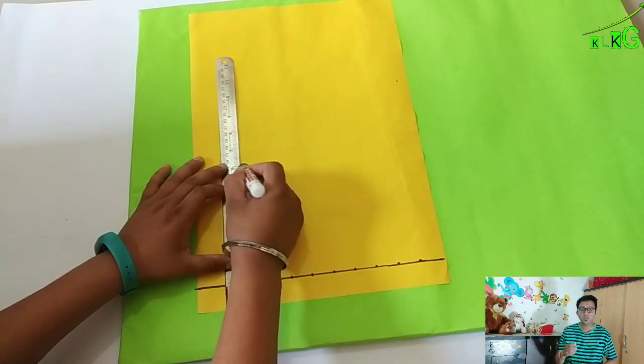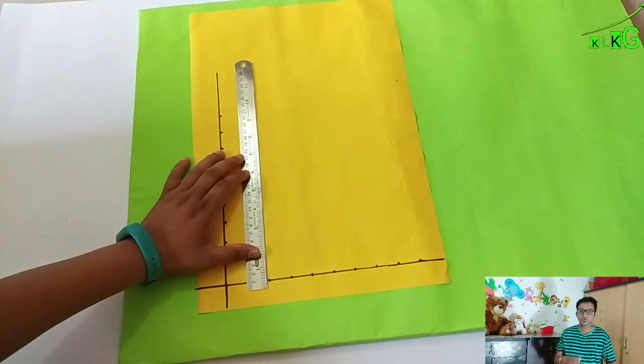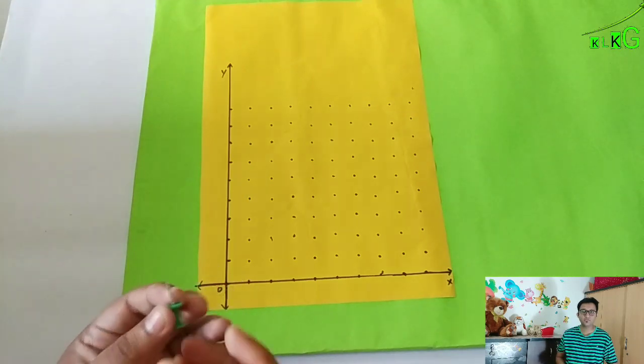Then at each one inch of distance I am going to put dots like this. You will get this kind of figure.